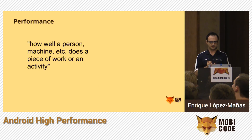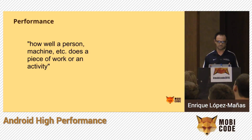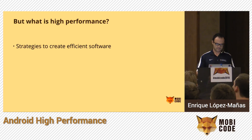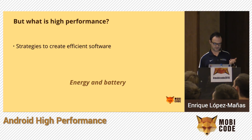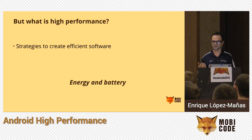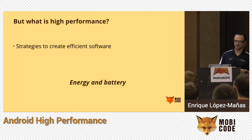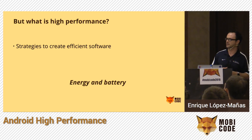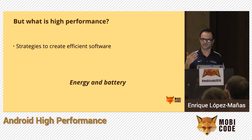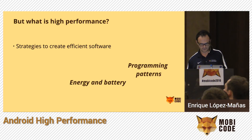What is performance? It's a very frequent topic now across many platforms, not only Android. The Cambridge definition is: how well a person, machine, etc., does a piece of work or an activity. High performance is about strategies to create efficient software. When it comes to mobile, we talk about energy and battery — the more energy we use, the less battery we have. A mobile application is essentially different from a desktop one because we have limited computational resources and battery. On desktop you don't have to think about network connections the same way; you generally assume Wi-Fi.